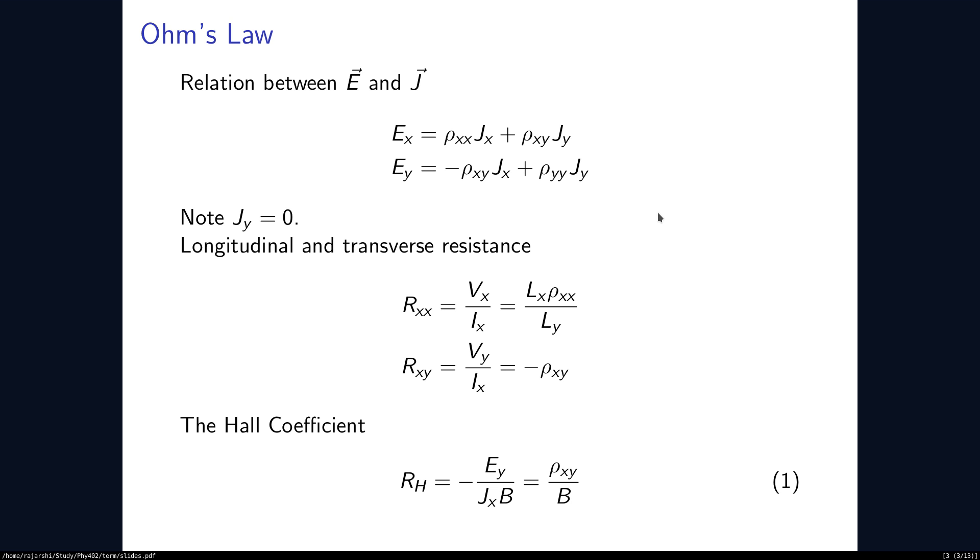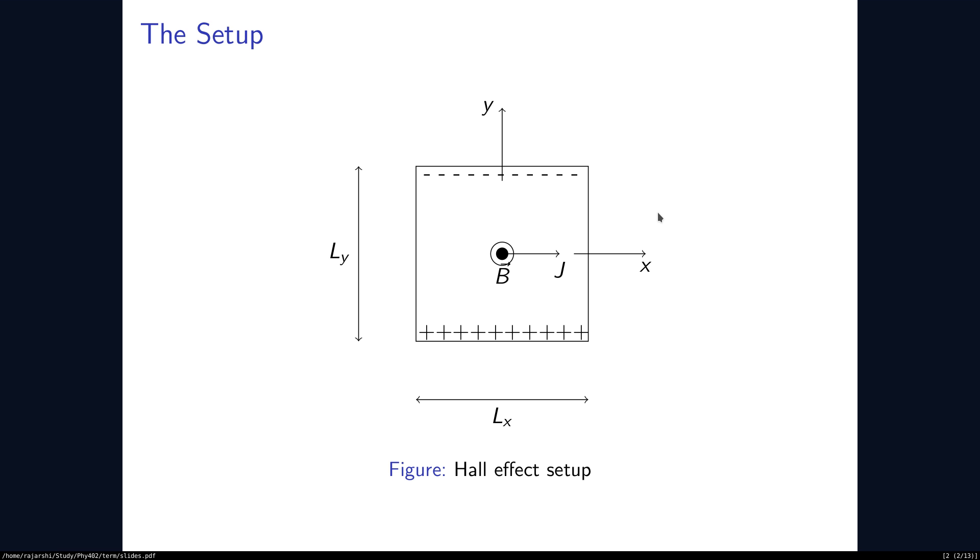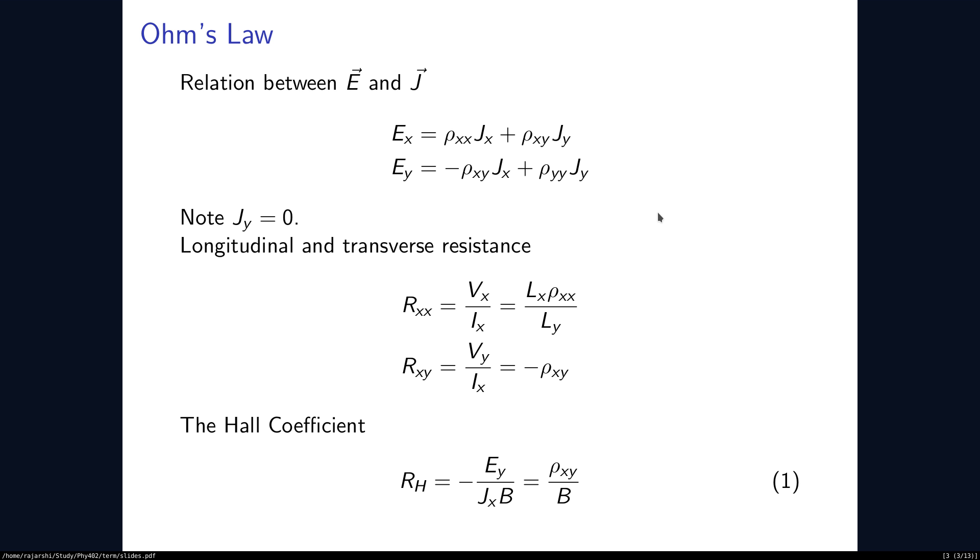The longitudinal resistance Rxx is Vx by Ix and it is related to the resistivity with some geometrical parameters. Over here it is Lx and Ly. Lx and Ly are the lengths of the material in the x and the y directions. Interestingly, when we look at the transverse resistance which is Vy by Ix, it is directly related to the resistivity xy and it does not depend on the geometrical properties.